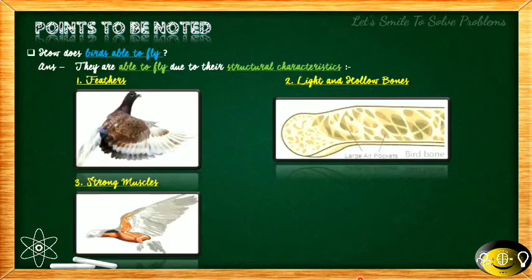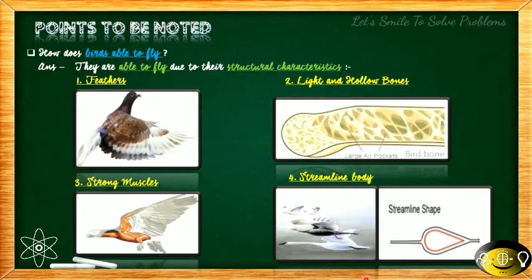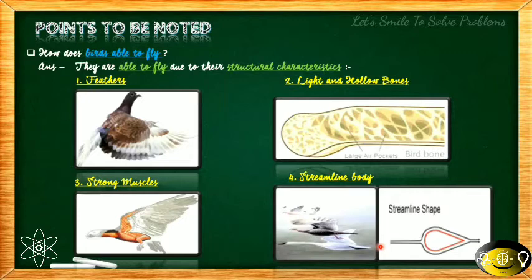This picture shows the muscles of birds. The fourth characteristic is the streamlined body. The streamline shape is narrow at the front, then becomes wide, and narrow again at the back. A bird's body is streamlined — the front and back are narrow while the middle is slightly wider. This streamlined body is the fourth characteristic that enables birds to fly.